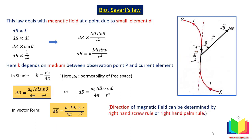A very important point: if theta is 0 degrees or 180 degrees, then dB will be equal to zero. This means that if point P lies on the axis of the wire — either directly ahead (theta = 0) or directly behind (theta = 180°) — since sin 0 and sin 180° are both zero, the magnetic field at that point will be zero.